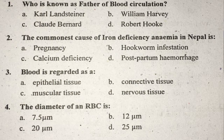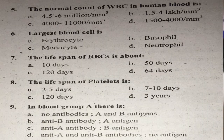Question number five: What is the normal count of WBC in human blood? The normal WBC count in human blood is 7,000 per millimeter cube. The right answer is C.